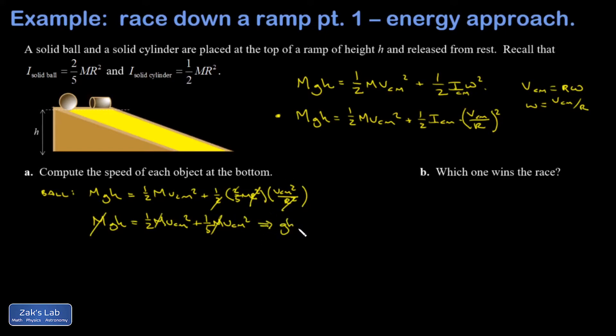On the left-hand side, I have GH. On the right-hand side, I have one half plus one fifth times V center of mass squared. V center of mass squared has been factored out. One half plus a fifth—a half is five tenths, a fifth is two tenths—so I get seven tenths.